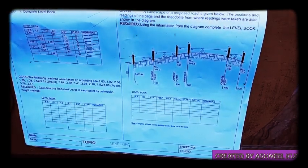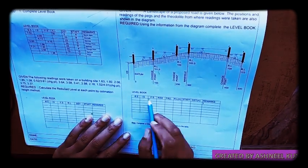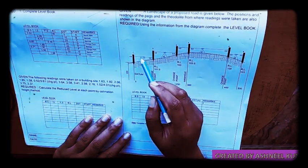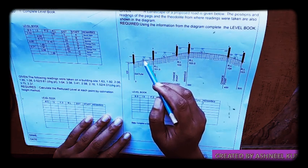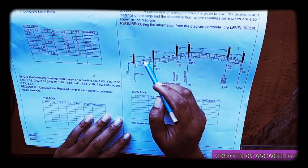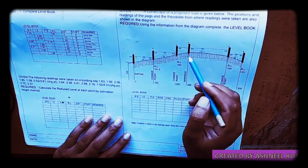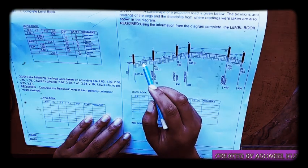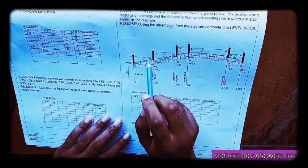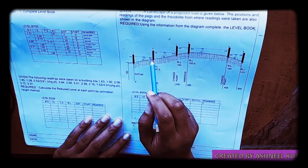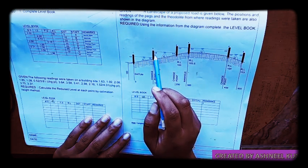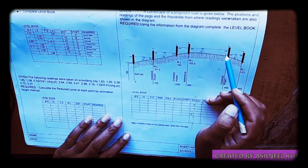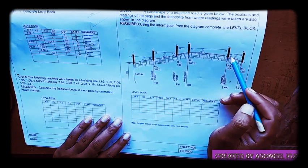Before we complete the level book we need to know what all this means. This is where the readings are taken — your current position. Station A, station B, station C, and station D. At station A we have readings 4.0 and 3.0. At station B: 4.5 and 2.5. At station C: 3.5, 3.0, and 2.5. At station D: 2.0 and 3.0.